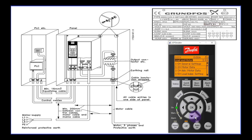Press the down arrow key to select 'motor data,' then press the OK button. The first thing to configure is the motor power — this is the motor power, 5.5 kW. Press the OK button to edit, then press the left or right arrow key to change the value. Change it to 5.5 kW, then press the OK button.